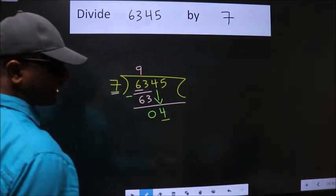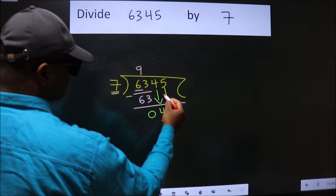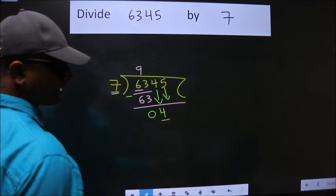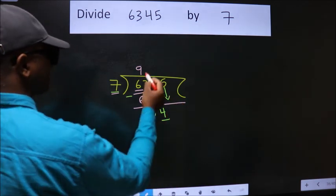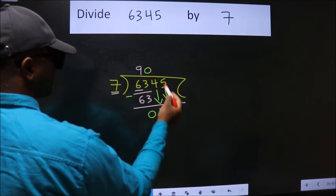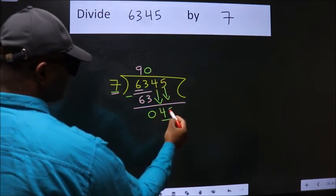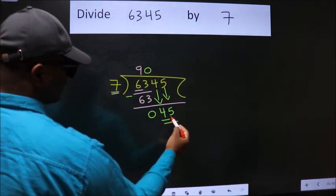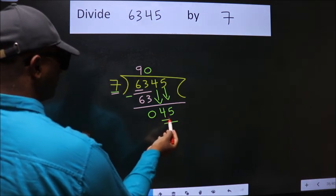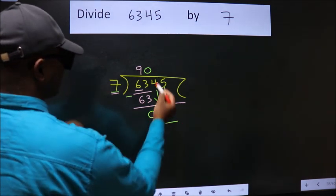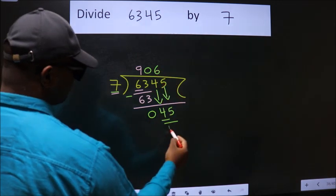So we should bring down the second number. And the rule to bring down second number is put 0 here. Then only we can bring down this number. So 45. A number close to 45 in 7 table is 7 6 42.